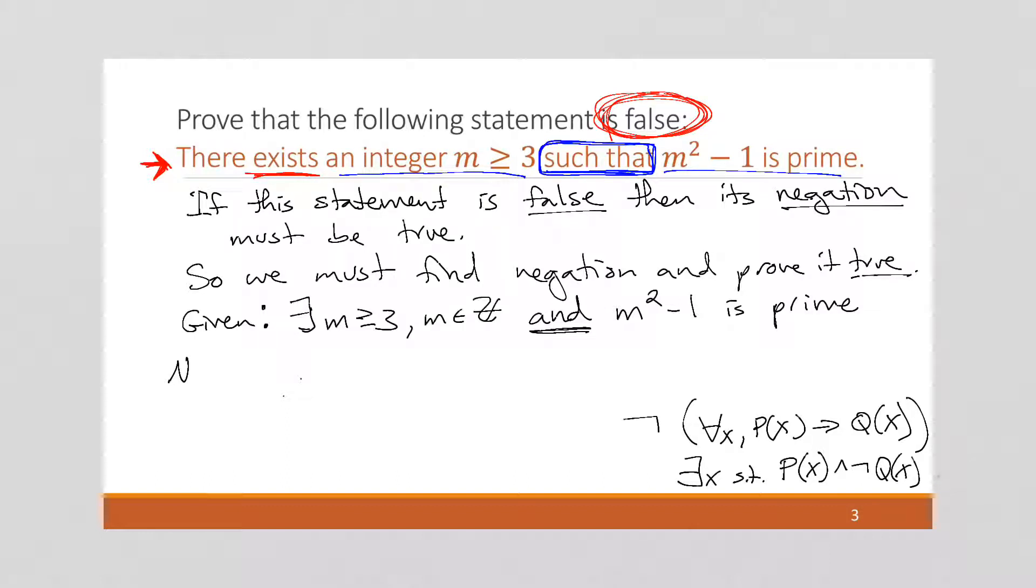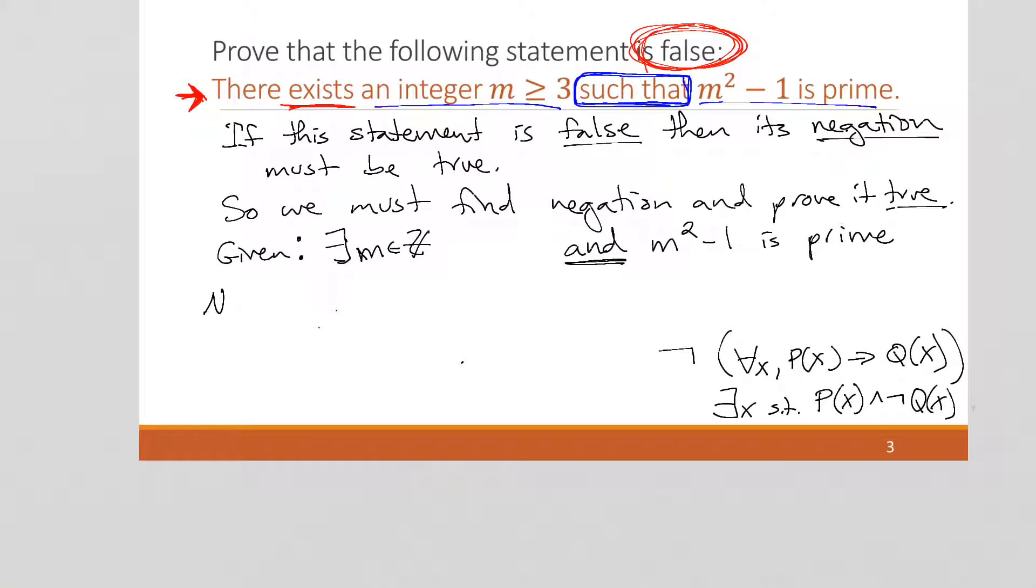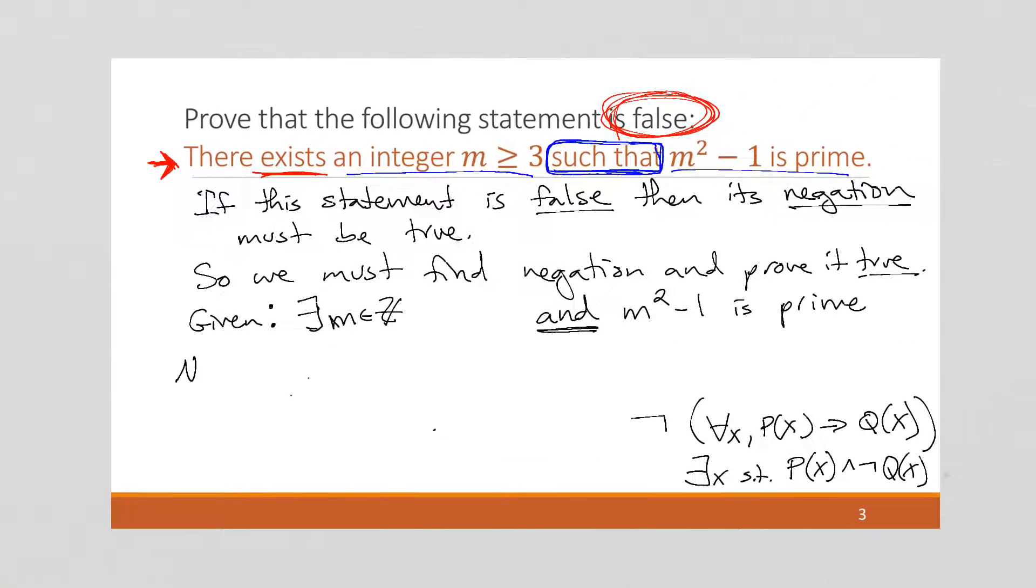So we can call this, let me rewrite this a little bit. I'm going to change it. I'm going to go back to the way I had had it. I'm going to say there exists an m in the integers such that m is greater than or equal to 3 and m squared minus 1 is prime. So this part becomes my p of x, and this part becomes my not q of x, right?